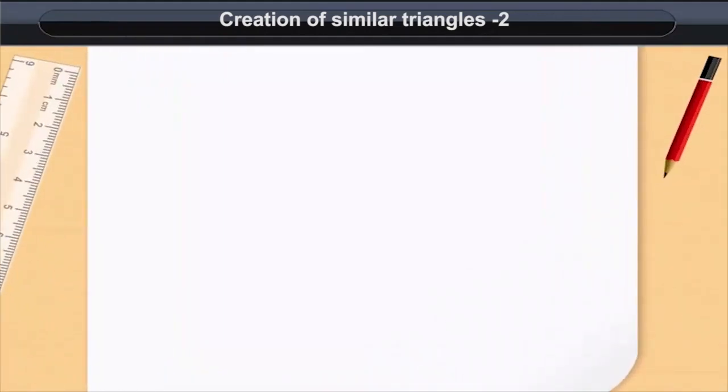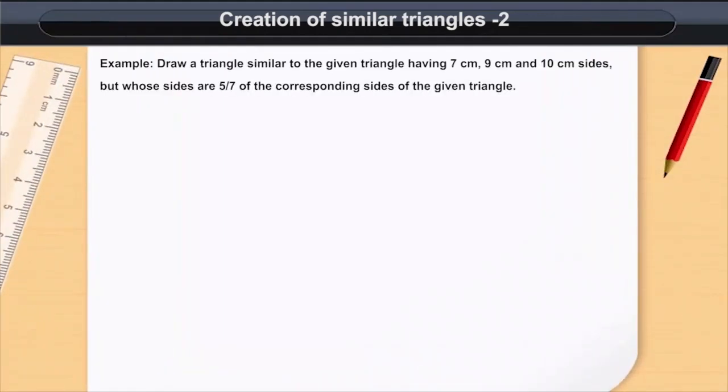Creation of similar triangles. Example: draw a triangle similar to the given triangle having sides of length 7 cm, 9 cm and 10 cm but whose sides are 5 by 7 of the corresponding sides of the given triangle.